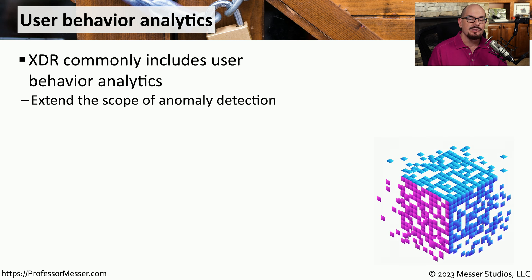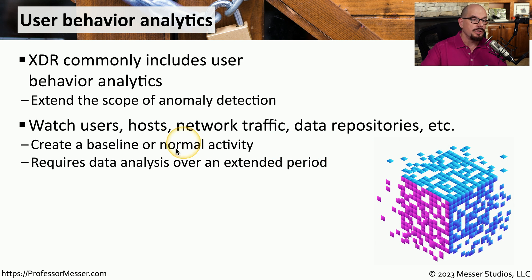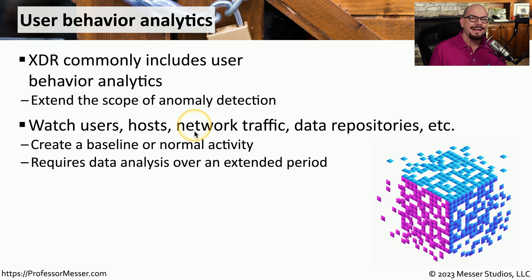The key to XDR is being able to monitor a large amount of data and correlate that data together. One data source used for XDR is user behavior analytics. This interprets user activity to build a baseline — XDR knows what users would commonly be on the network, what devices these users would connect to, the type of network traffic commonly transferred, and the data repositories accessed by these users. By understanding what normal activity looks like, we can easily find when abnormal events occur.